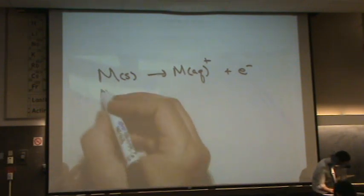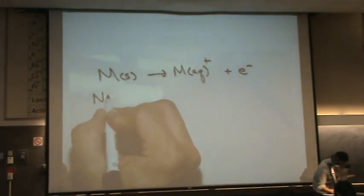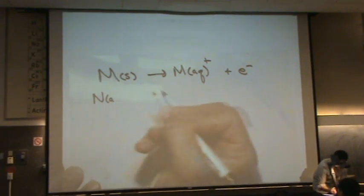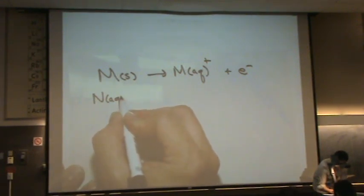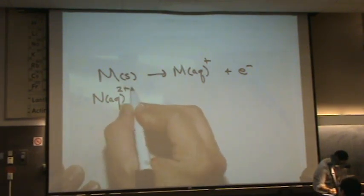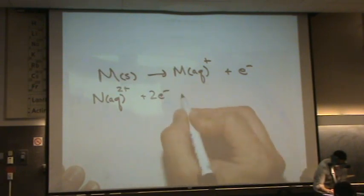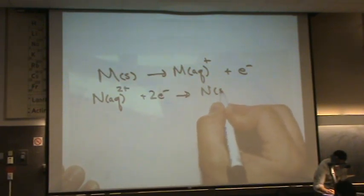And then let's say we have another metal in the aqueous state, we'll call that metal N, not nitrogen, just some metal. Let's say it's two plus, and we add two electrons to go to the solid metal state.